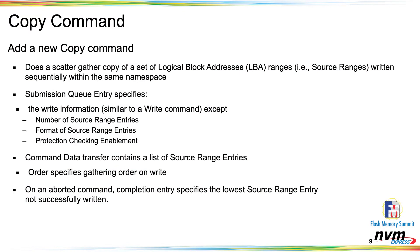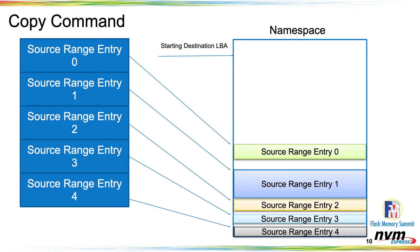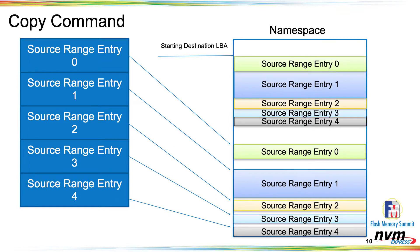Peter talked about the copy command, which is really just doing a scatter-gather. The animation shows that it takes data from source ranges on the left, reads them, and places everything at the destination. I showed it in order, but the controller can actually move the different source range entities in any order it wants. The ultimate goal is that when the command completes, starting at the destination LBA, you'll find the sequential ordering of the source range entities in the order they were specified by the host.